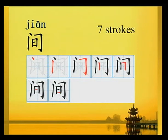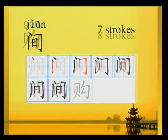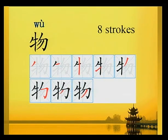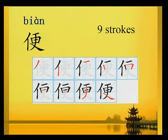够 has eight strokes (够有八个笔画)。握 has eight strokes (握有八个笔画)。变 has nine strokes (变有九个笔画)。